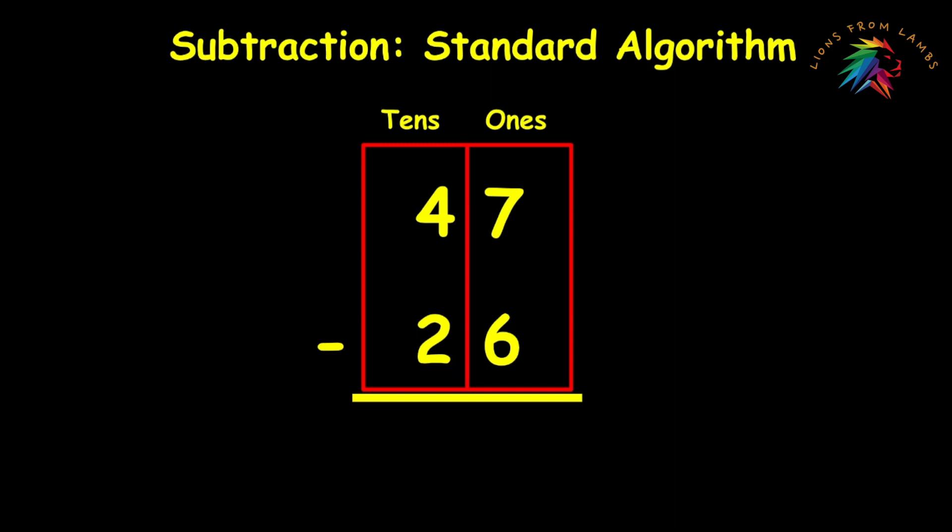Top number, 7, minus the bottom number, 6. 7 minus 6 equals 1. Now we'll move to the tens place. Top number, 4, with a value of 40, minus the bottom number, 2, with a value of 20. 4 minus 2 equals 2. 47 minus 26 equals 21.